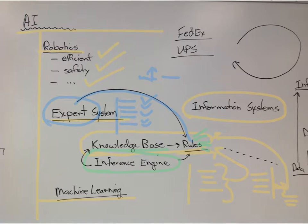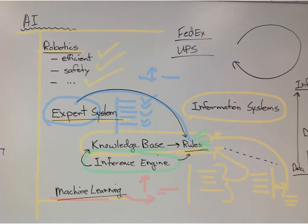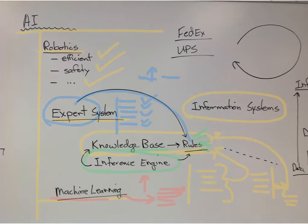Machine learning: we can design software to do specific things, but we can also have the machine — the computer, device, whatever — learn. It takes what it has learned and makes it better. An example is how machines recognize our voice. Every time they recognize us saying something, they record that, and the next time they can get it a little bit better. They learn from the experience. It's really incredible how some of that works.